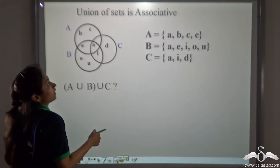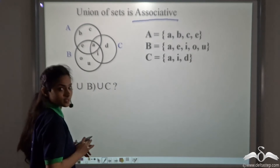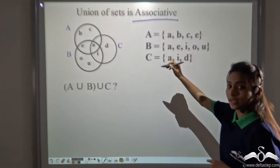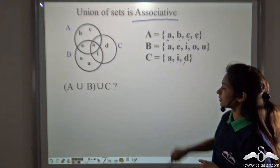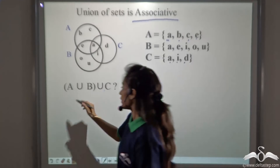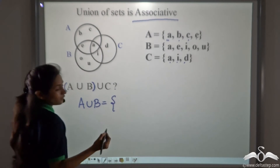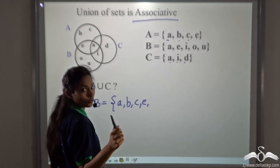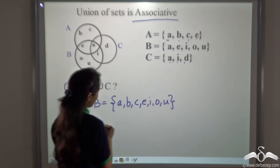Now one more property sets have: union of sets is associative. Let's consider an example first — then you will know what associative means. Here we can see three sets A, B and C. A is the set containing elements {A, B, C, E}, B is the set of vowels of the English alphabet, and C is {A, I, D}. Now can you find out (A union B) union C? We have a bracket, so we solve that first. A union B gives us A, B, C, E — then the remaining vowels not already listed: I, O and U.